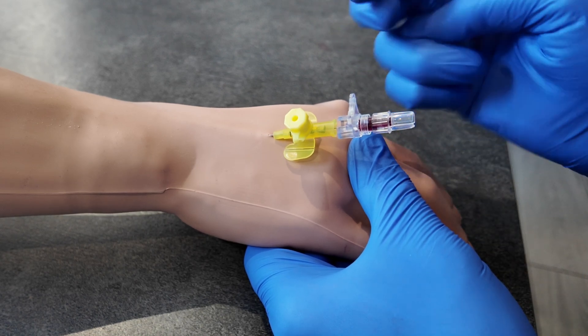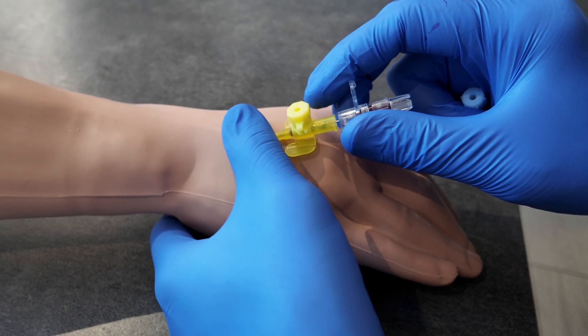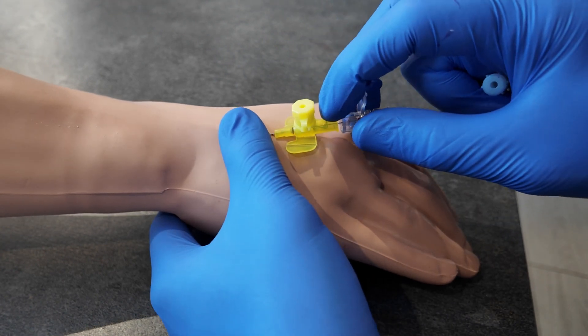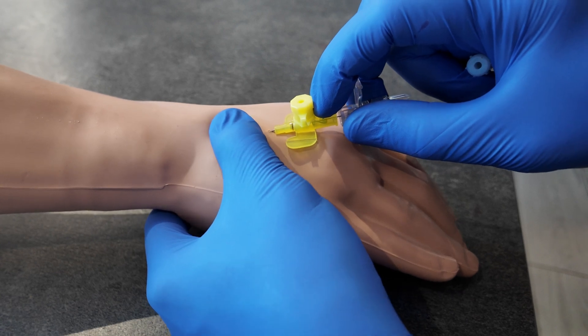We can let go of the hand, then put a bit of pressure just above the cannula here. Then we take our needle out and put our cap on.